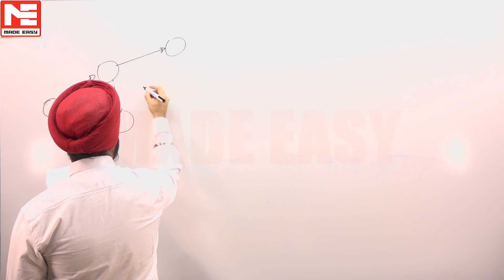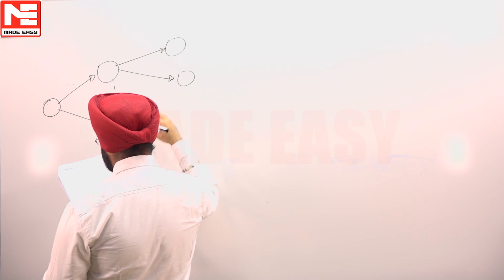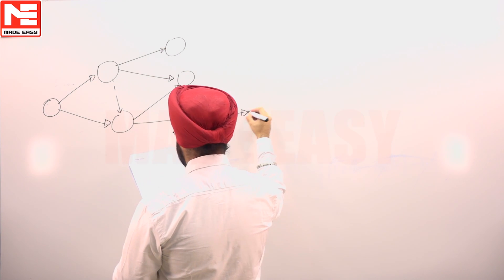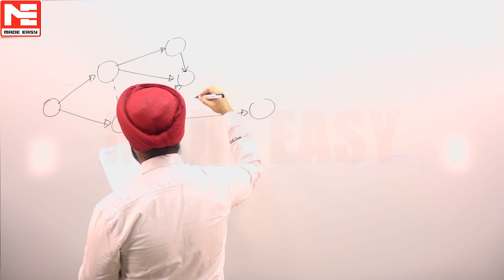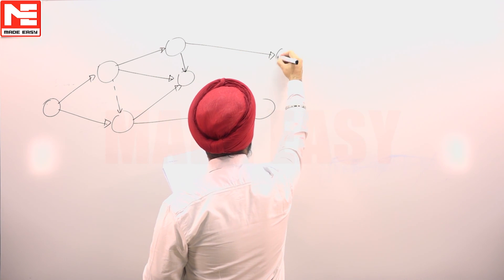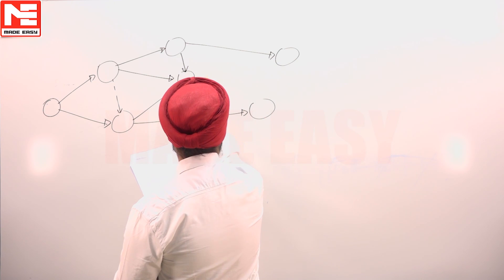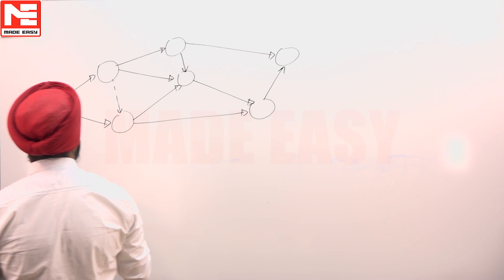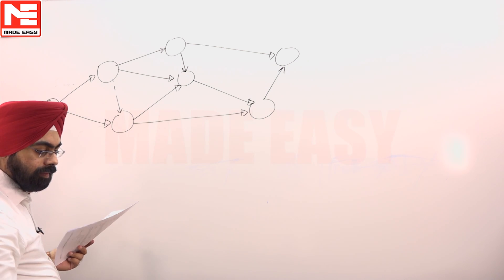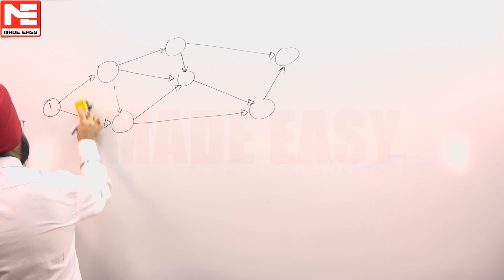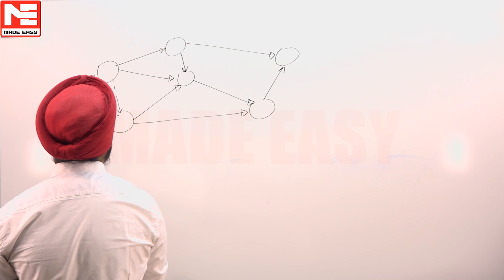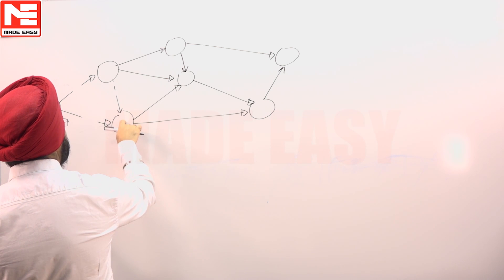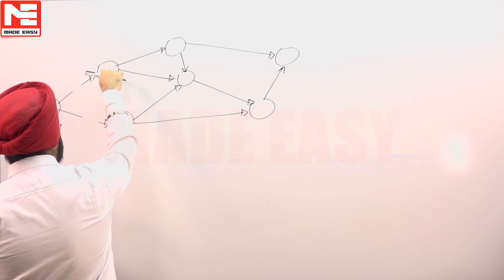According to the full cut sense rules, number the initial event as 1. The initial event will have only outgoing arrows in it. So this is the network which is given to us. As per the full cut sense rule, we number the initial event as 1, then remove all the outgoing arrows, and new initial events will be formed. Initial events are those which have only outgoing arrows — if a node has an incoming arrow, it is not an initial event.